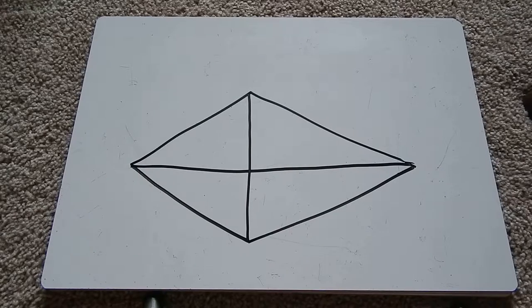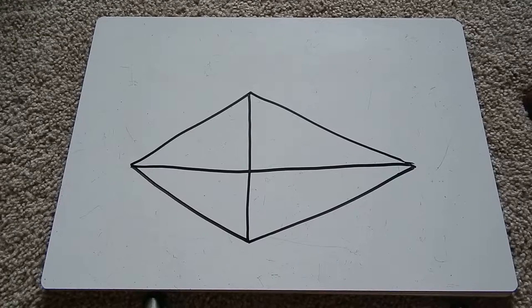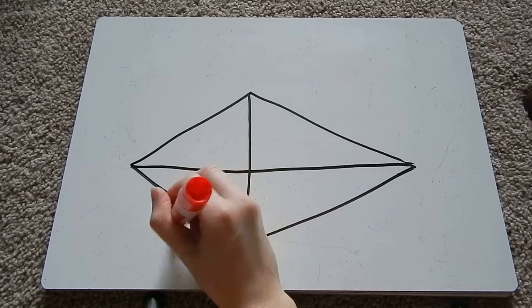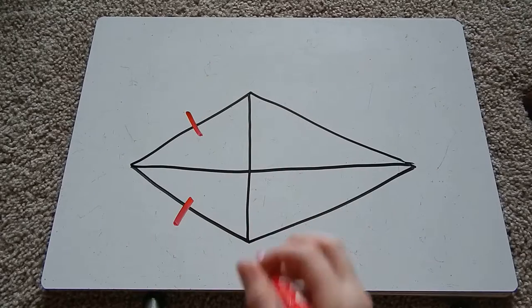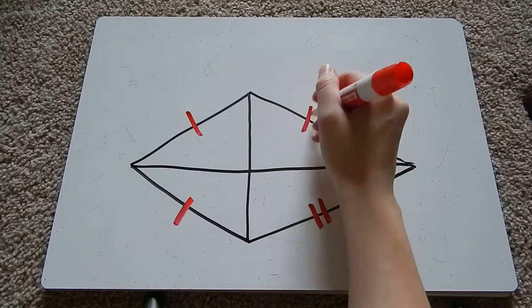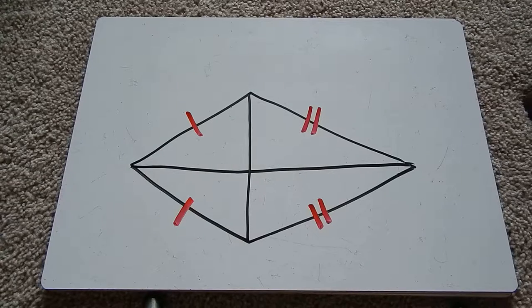but there are two sets of consecutive sides that are congruent, which means these sides will be congruent and these sides will be congruent. Consecutive sides congruent.